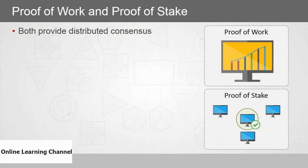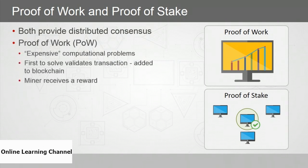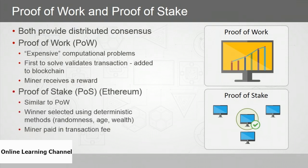There are two main ways consensus is reached. The first method, proof of work, is used to solve expensive computational problems — expensive in the sense of massive computing power. It's like a competition: the first node or miner to solve a problem validates the transaction, is added to the blockchain, and receives a reward. Proof of stake, preferred by Ethereum, is similar but the winner is selected using deterministic methods such as randomness, age of the miner on the network, and wealth. The miner is paid in transaction fees rather than a block reward.